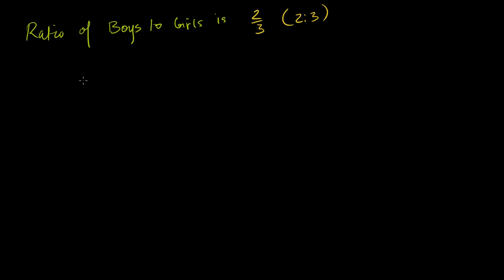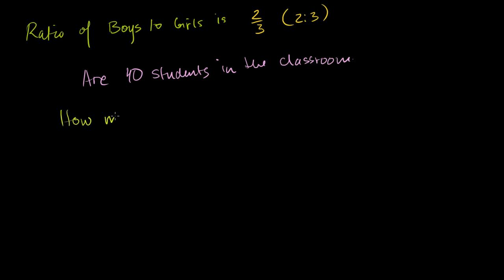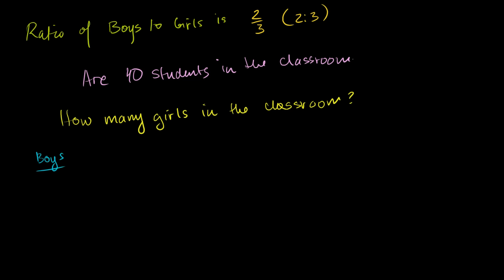And let's say there are 40 students in the classroom. Someone asks: how many girls are there? This seems more convoluted — we know the total number of students and the ratio, but how many girls are in the room? The ratio of boys to girls is 2 to 3.